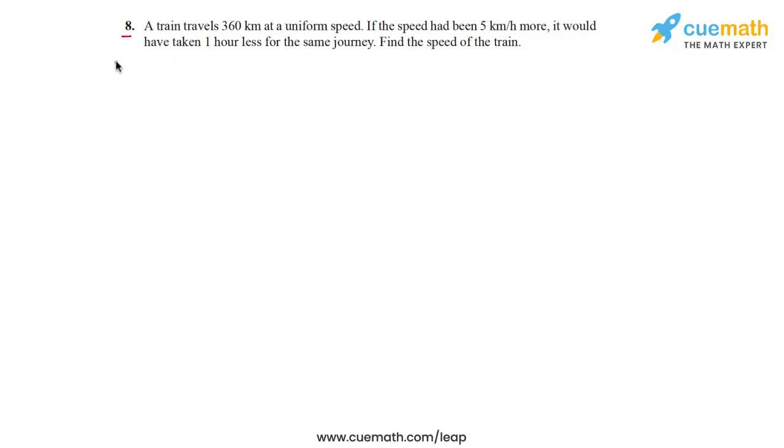In question 8 of this exercise, the problem statement says a train travels 360 kilometers at a uniform speed. If the speed had been 5 kilometers per hour more, it would have taken one hour less for the same journey. Find the speed of the train. So suppose that the train goes from point A to point B, which is a distance of 360 kilometers.